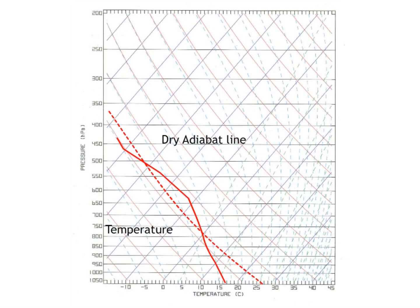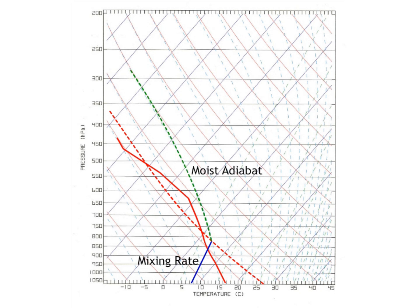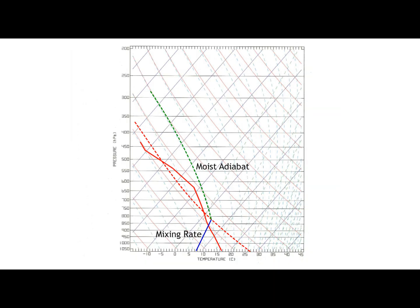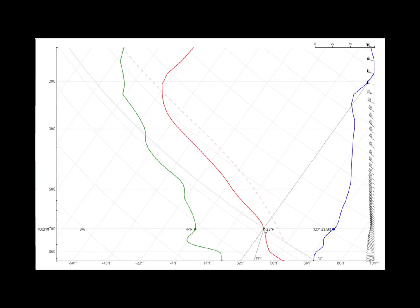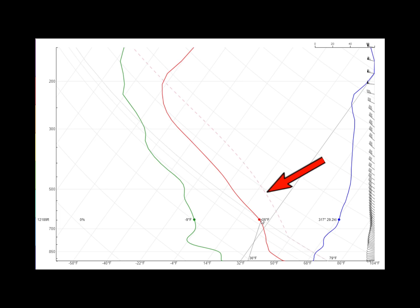Once saturated, the air cools off at a rate known as the moist adiabat. Initially, this cooling rate is much slower than the dry adiabat, and as the air continues to rise and there is no more water vapor to convert — and things start to get frozen — the moist adiabat gets closer to the dry adiabat. These lines are drawn for you depending on the chart. On the sky site version, this is shown as a dashed red line rising from the dry adiabat.